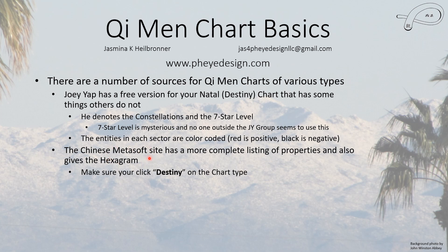When you enter your time and date of birth on the Chinese Metasoft site, make sure you click 'destiny' on the type of chart. You put in your time and date of birth, pick your year and month first, then click on the day — it'll bring up a little calendar. Next you enter the time, and then to the right of that you pick your chart type and select 'destiny.'